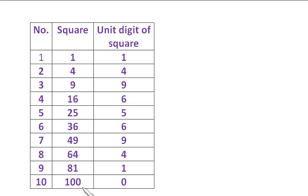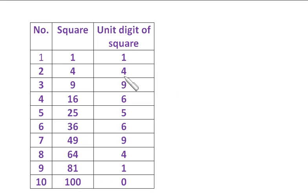Now observe the unit digits: the unit digit of square of 1 is 1, square of 2 is 4, numbers ending in 3 give a square ending in 9. The square of 1 and 9 both end in 1; the square of 2 and 8 both end in 4; the square of 3 and 7 both end in 9; the square of 4 and 6 both end in 6; the square of 5 always ends in 5; and numbers ending in 0 always have 0 at their unit place.